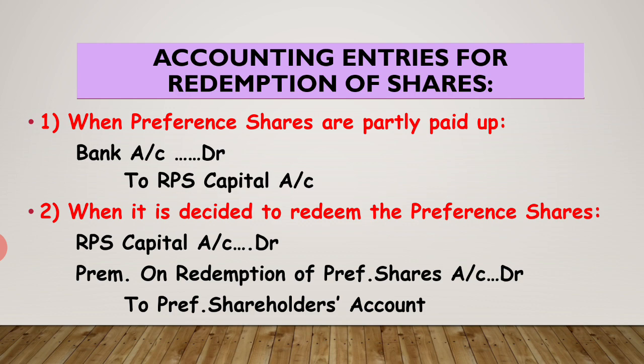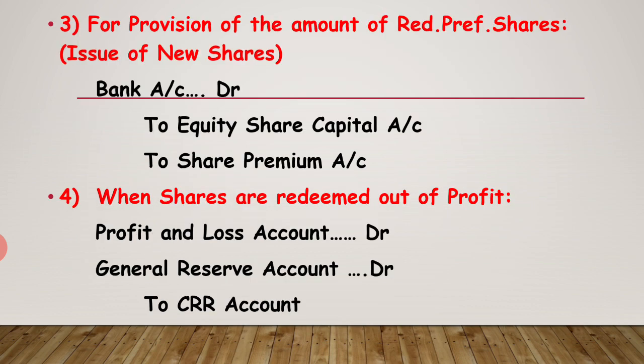Each and every question you pass this entry. Number 3: Provision for the redemption of preference shares. Remember students, provision must be made, and there are two options for the provision. One is issue of new shares, and the second one is out of profit. If you issue new shares, then you write: bank account debit to equity share capital account and to share premium account. And if you use profit, out of profit, then you write: profit and loss account debit, general reserve account debit to CRR. Sometimes we use any one of the entries, and sometimes we use both entries.